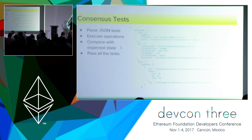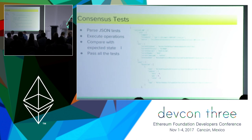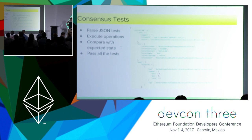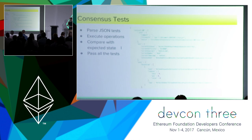A special mention goes to consensus tests — a comprehensive corpus of tests developed and maintained by our testing team. They are JSON files, each specifying some initial Ethereum state, some operations on it in the form of transactions or blocks, and the expected state after that. The client implementation must be able to parse these files, run the tests, compare the final state, and pass all of them. Dimitri is giving a talk about this in an hour in the breakout hall if you're interested.